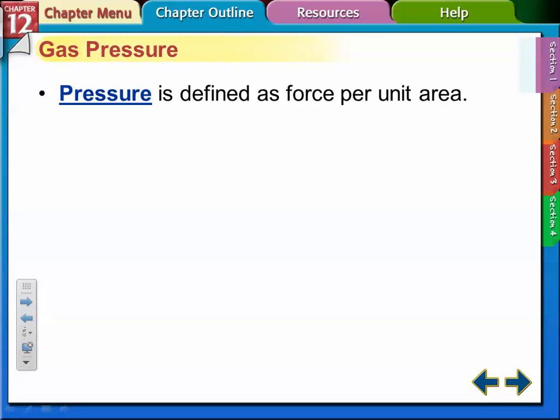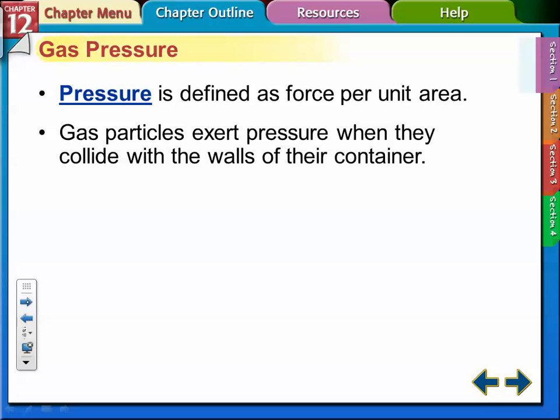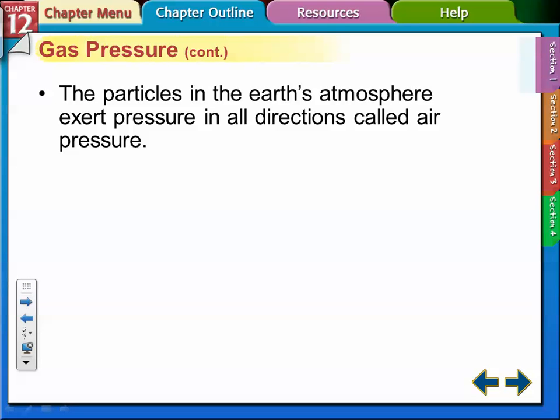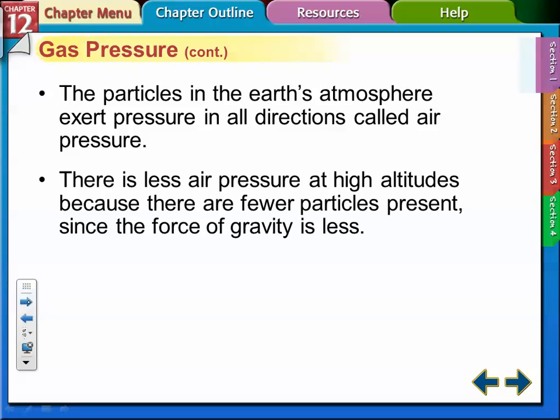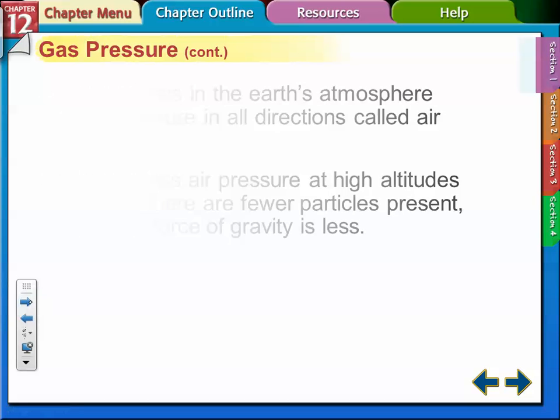Pressure is defined as the force per unit area. Gas particles exert pressure when they collide with the walls of their container. The particles in the Earth's atmosphere exert pressure in all directions, called air pressure. There's less air pressure at high altitudes. When you go up to Truckee or the mountains or ski areas, your ears pop because there's less air pressure there. If you take a bag of chips and take it up to the mountains, it seems to expand because there's less air pressure at higher altitudes.